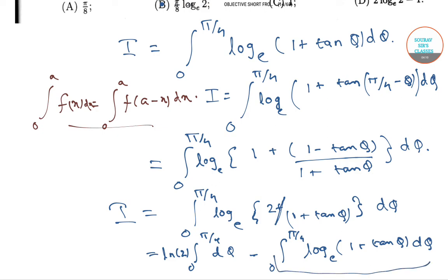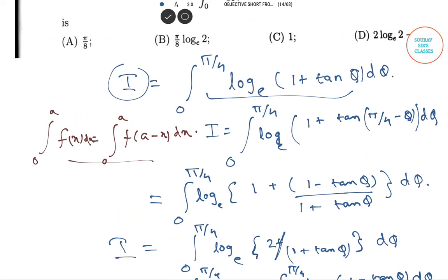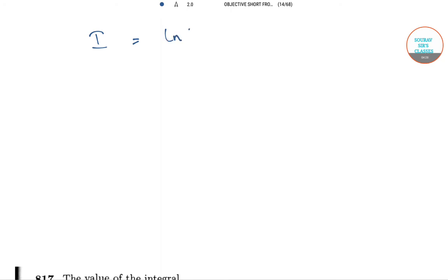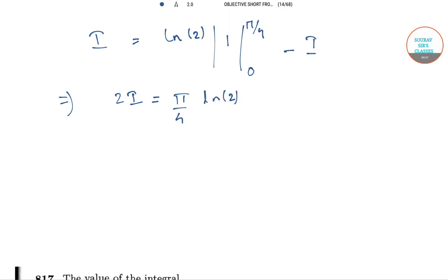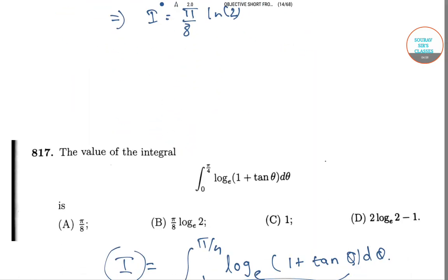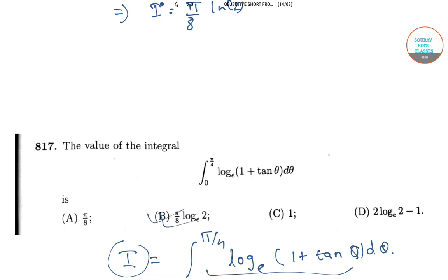Now this last integral is our i. So we get i equals ln 2 · [θ] from 0 to π/4 minus i, which implies 2i equals π/4 · log 2. This implies i equals π/8 · log 2, which is option B. So the correct answer is option B.